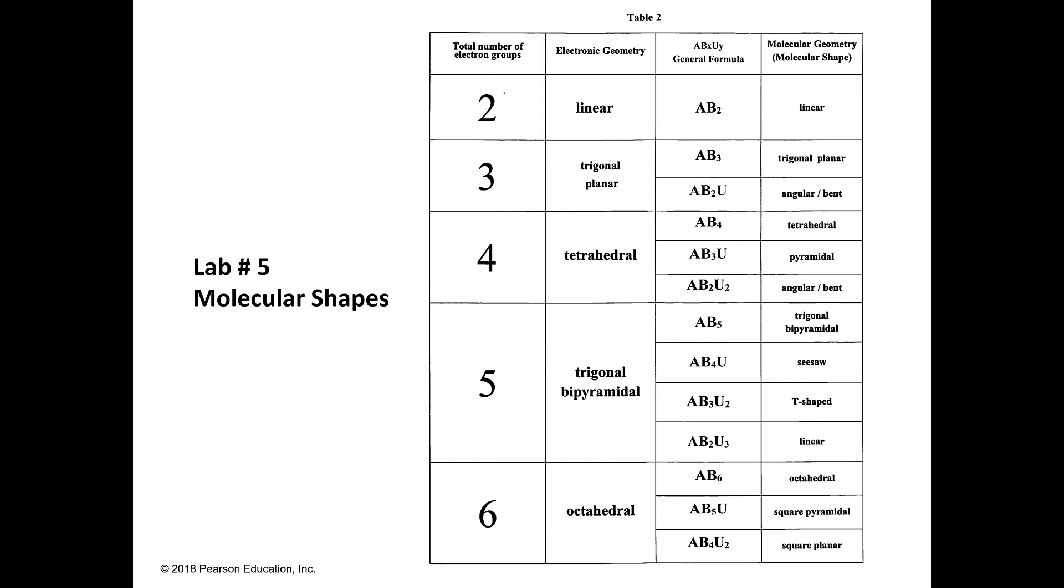So this is kind of like the summary chart for this. So if you have two electron groups, your electronic geometry is going to be linear. If you have three, it's going to be trigonal planar. Four, tetrahedral. Five, trigonal bipyramidal. Six, octahedral. Period.